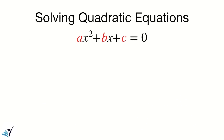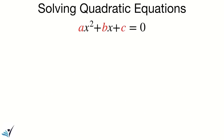When you set a quadratic expression equal to zero, you are looking for the intersection of the parabola with the horizontal axis. Those intersections are called roots of the expression or the parabola.